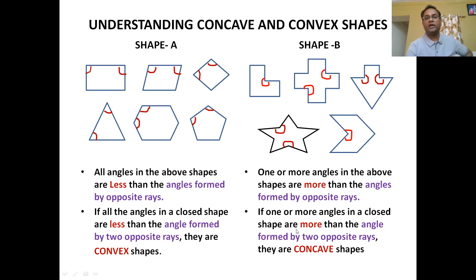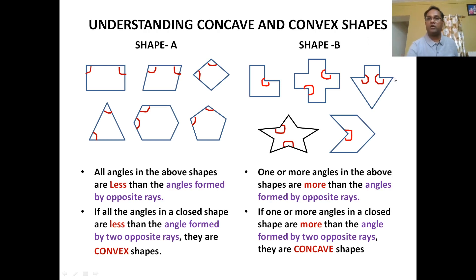One more way to identify concave and convex shapes: in concave shapes you can find a curvature bent inside — there is a curve inside as if a cave is formed. In Hindi we say 'pichka hua' — as if one side has been pushed in. Such shapes are called concave shapes. Whereas convex shapes are all bulged outward. These bulged shapes are called convex shapes.